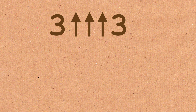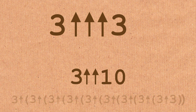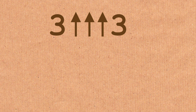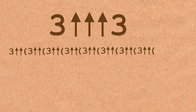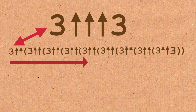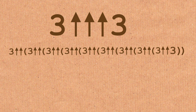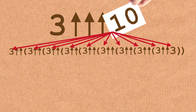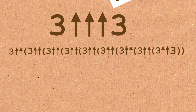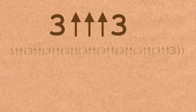What about 3 triple arrow 3? Well, just like double arrows created a string of single arrows, triple arrows create a string of double arrows. Take the lead number — again 3 in our example — and string it out like this: 3 double arrow, 3 double arrow, 3 double arrow, etc. Again, if the trailing number had been, say, 10, it would have looked like this with 10 3s. But luckily, the trailing number here was a measly 3, so we only need 3 3s.